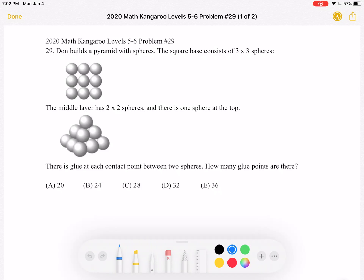There is glue at each contact point between two spheres. How many glue points are there? A, 20, B, 24, C, 28, D, 32, or E, 36.